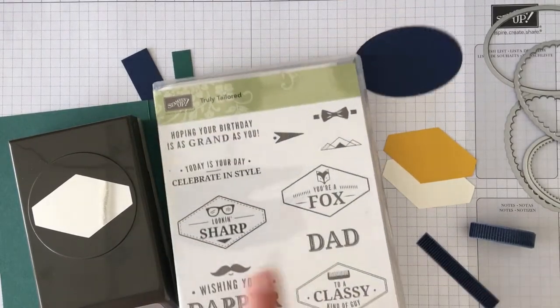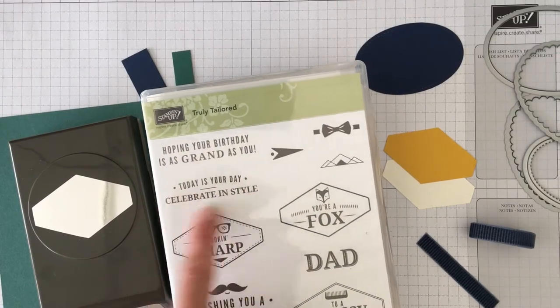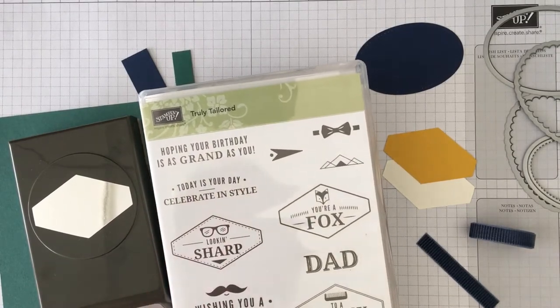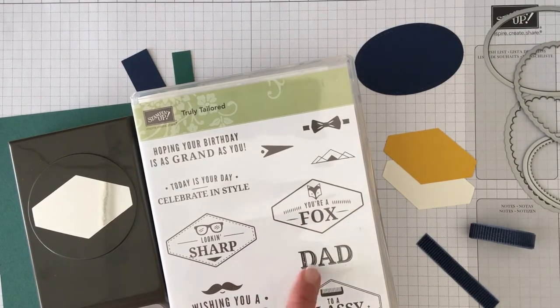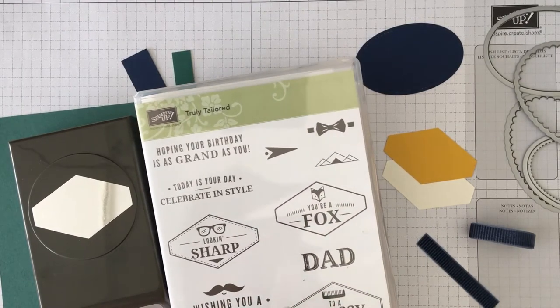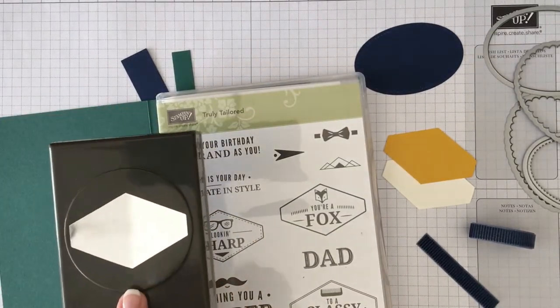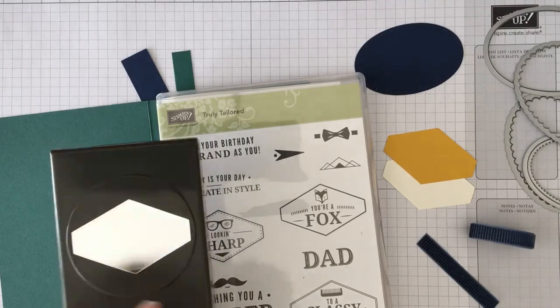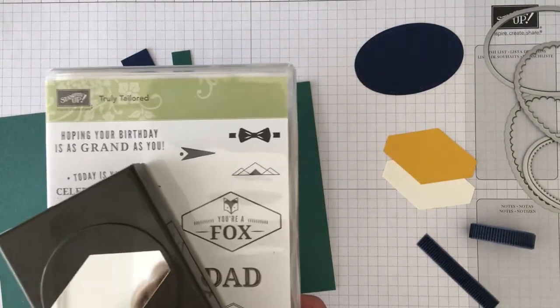So to get started, the Truly Tailored stamp set has birthday, general congratulations, celebrate in style, maybe for Valentine's Day you could send this to your sweetheart with you're a fox, you've got a dad and a classy kind of guy. It comes bundled at a 10% discount with the tailored tag punch. Those are bundled together in the occasions catalog.